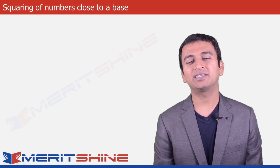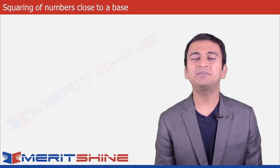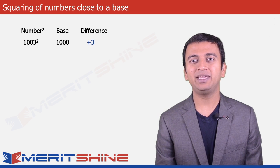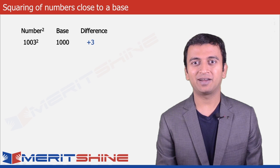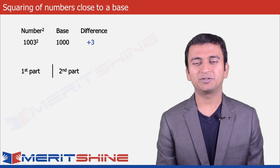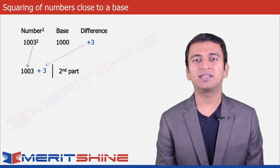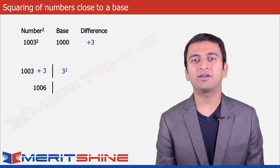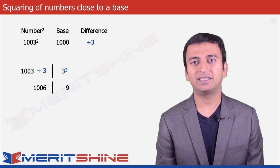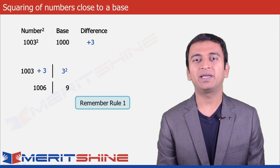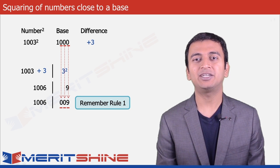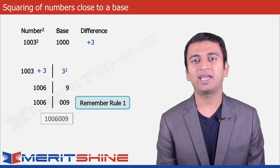Let us now try to find the squares of numbers which are close to a base. Let us begin by taking 1003 as an example. Here our base would be 1000 and the difference would be plus 3. The first part would be the number added to the difference, which would be 1003 plus 3 giving us 1006, and the second part would be the square of the difference, which is 3 squared giving us 9. Since our base had three zeros, the second part will have three digits, so we will have to add two extra zeros in front of 9, giving us 1006009 as our final answer.